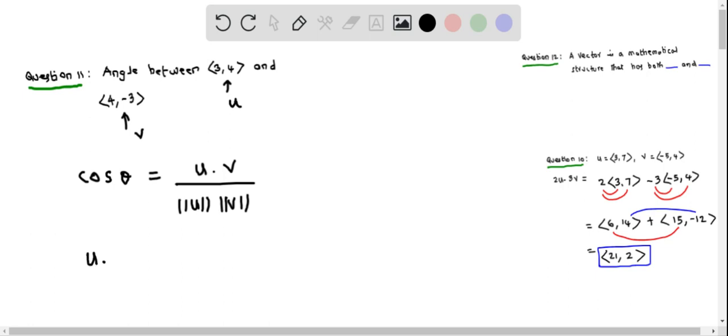First, I am going to find the dot product u·v. This equals <3, 4> dot <4, -3>. When we do the dot product, we multiply the corresponding components: 3 times 4 and 4 times -3, then add them together.